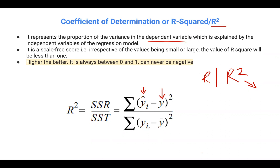In our denominator, we have SST, which is the sum of squares total. This is given as the squared differences between our observed y — this is our observed dependent variable, also called the target variable or outcome variable — and the mean of the dependent variable.